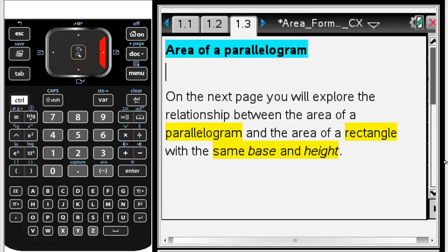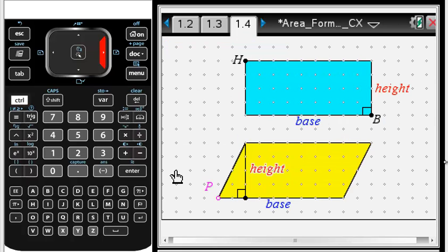Control right arrow to page 1.3 and you can read that page and see what's highlighted. Control right arrow to page 1.4.